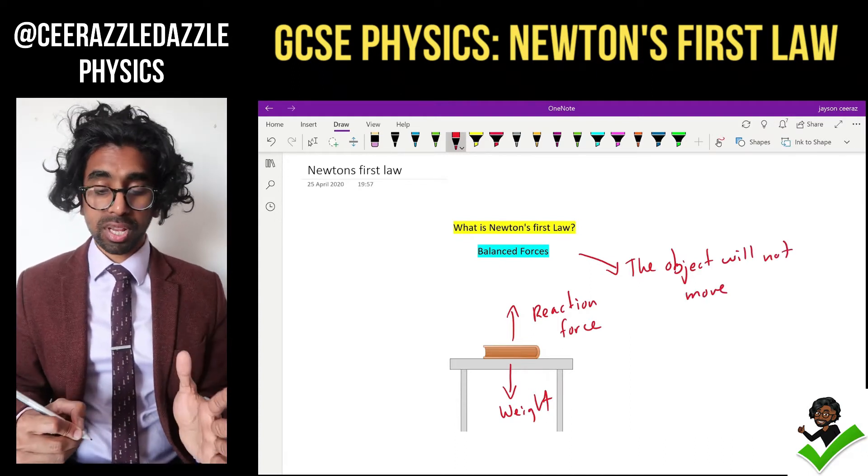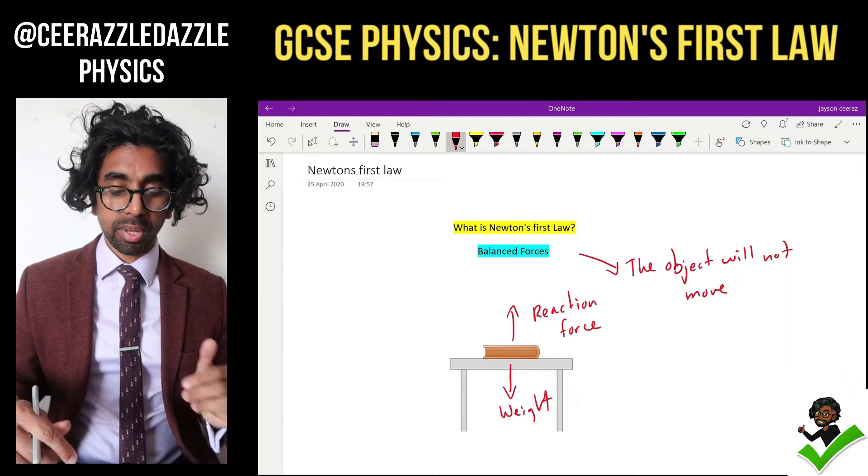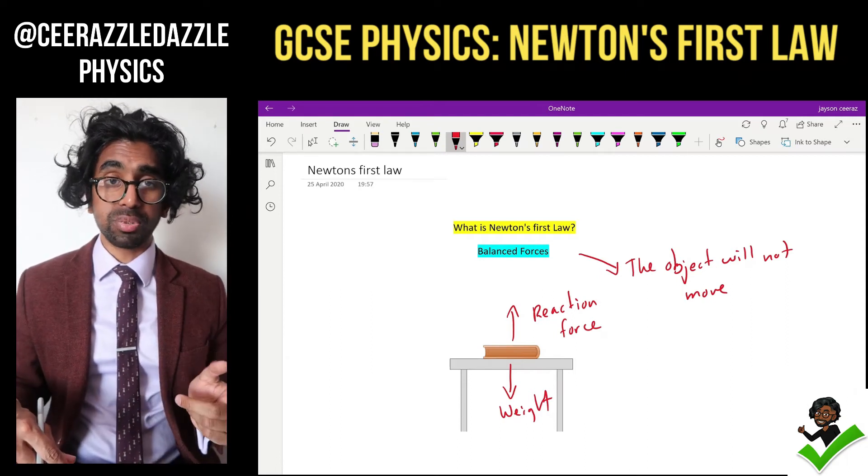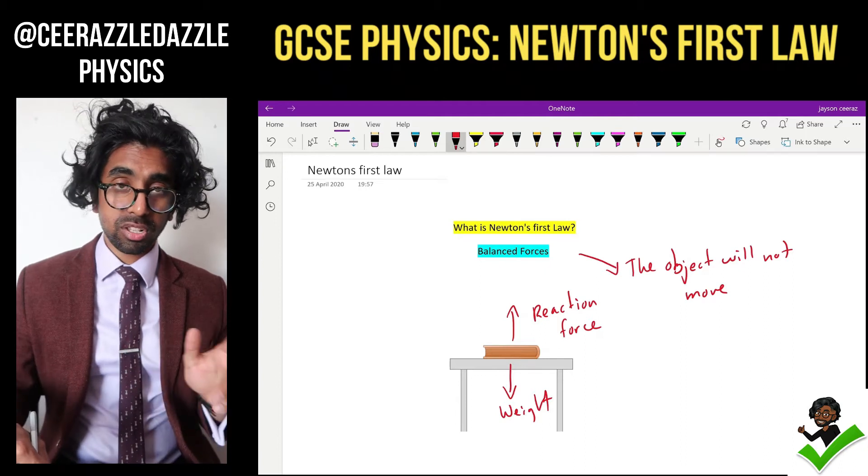So when the forces are balanced upon an object, the object will not move. But there's another scenario when the forces are balanced and the objects are still moving. Let's look at two examples.